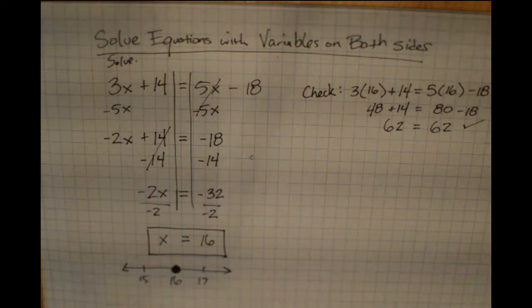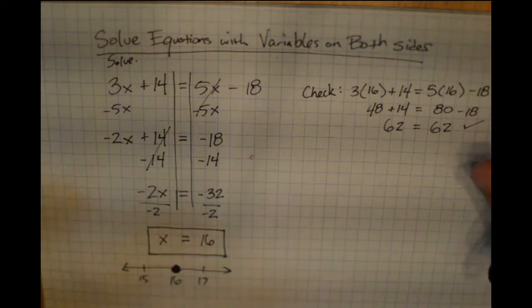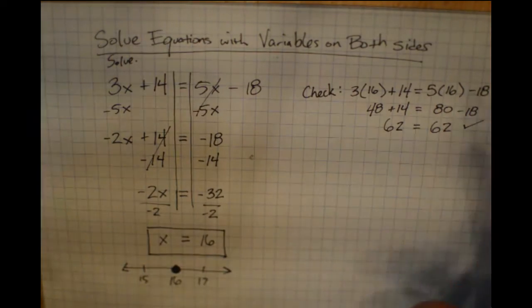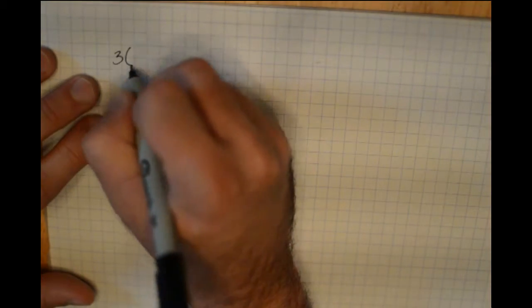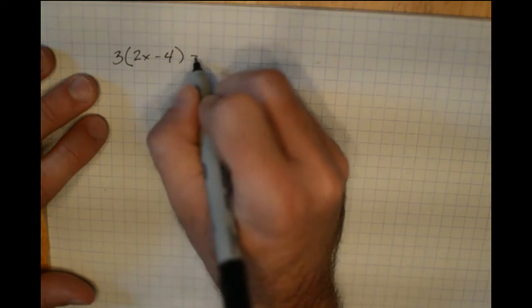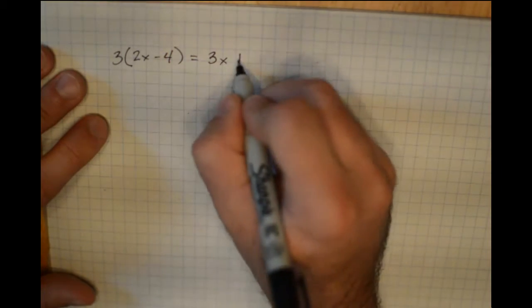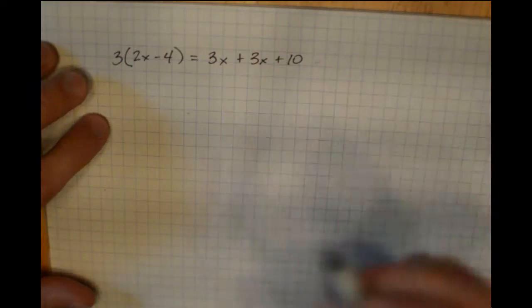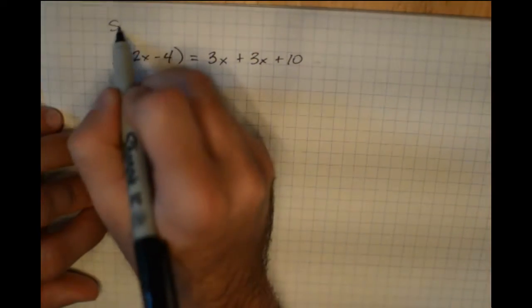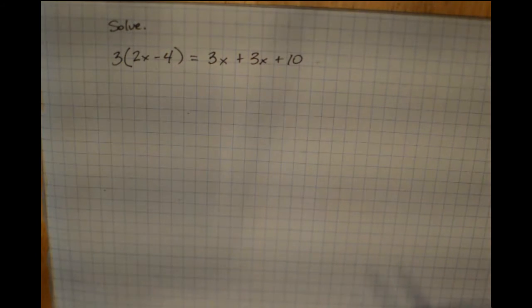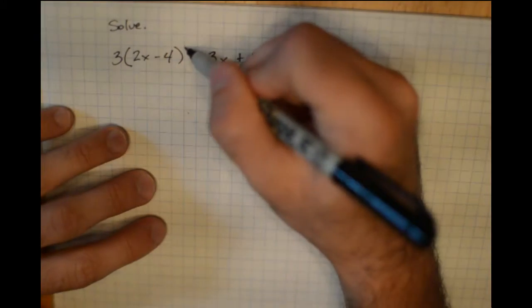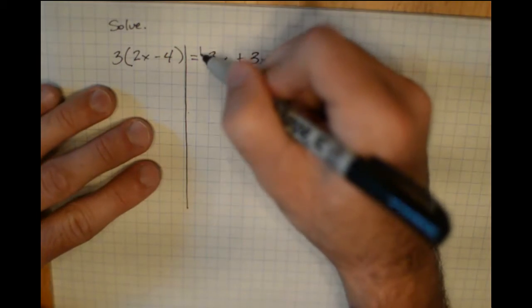Now I want to look at a couple of special cases. When you have variables on both sides, something can happen where the variables get eliminated on both sides. Let's look at an example: 3 times the quantity 2x minus 4 is equal to 3x plus 10. I'll separate my left side from my right side, and work on getting the variable term on one side and the number terms on the other.